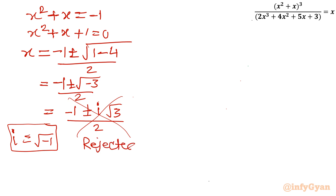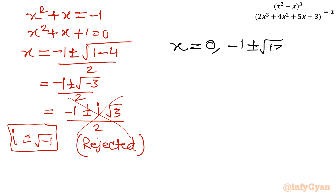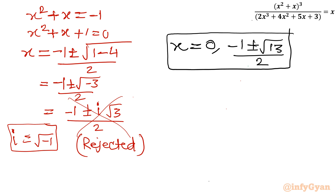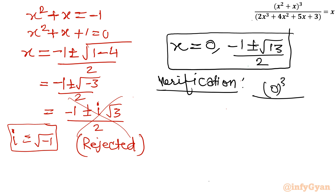Our final real solutions are: x = 0 and x = (-1 ± √13) / 2. Let's verify x = 0: putting x = 0 gives numerator = (0² + 0)³ = 0, and denominator = 3, so the left-hand side = 0/3 = 0, which equals the right-hand side x = 0. Verified!